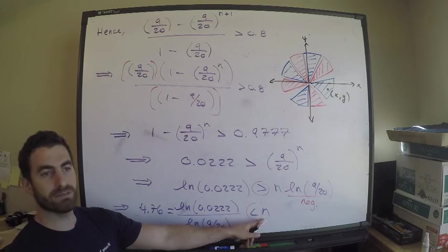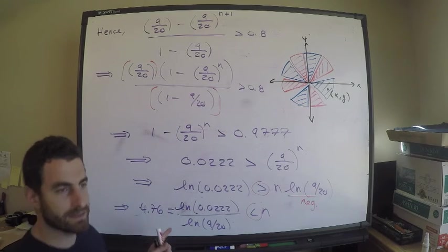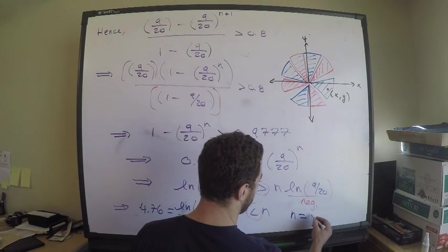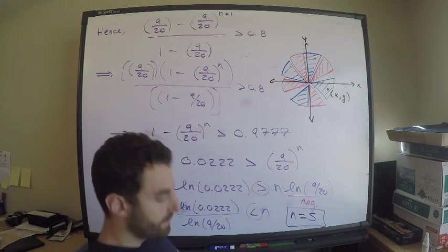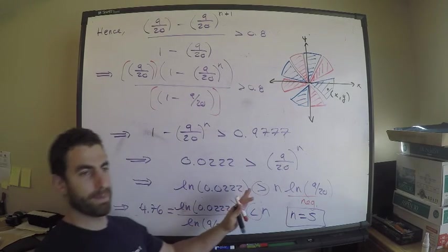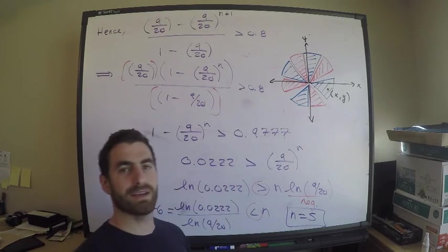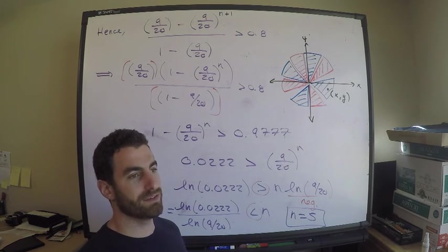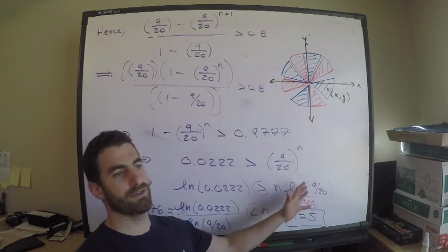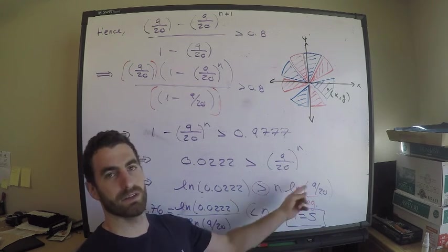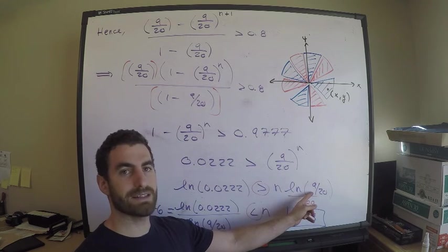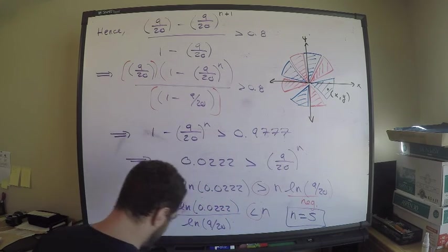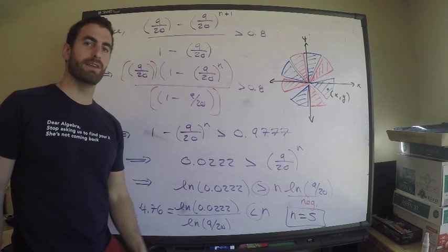So n must be at least 4.76. We can't have fractions of red sectors, which means n is 5. That's my answer. Beware: whenever you take ln of a fraction, this comes up frequently for exam P. I made mistakes simply because I wasn't aware that ln of a fraction is negative. Thank you for subscribing and please like the video.